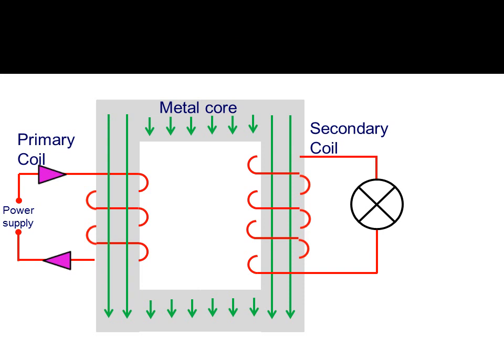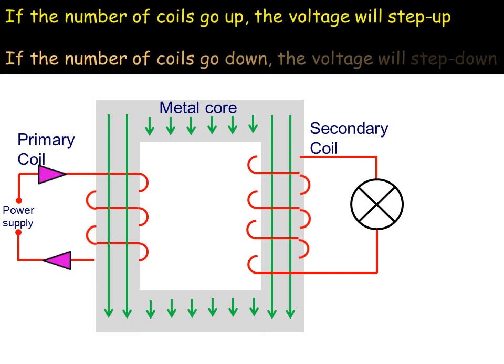The voltage and current are related by the next formula. If the number of coils on the right hand side goes up, so if the secondary coil has more coils than the primary, then it's a step up transformer. If the number of coils in the secondary is less, then it's a step down transformer and the voltage will step down.